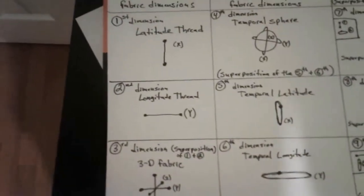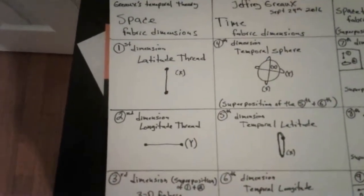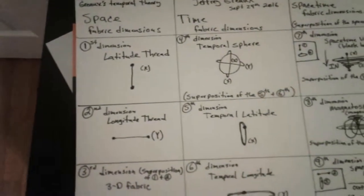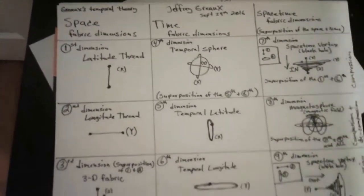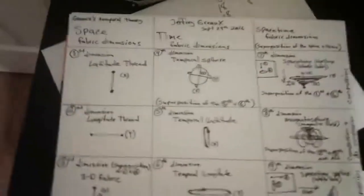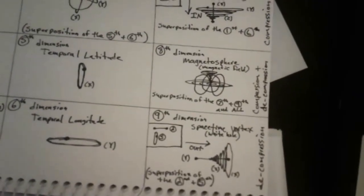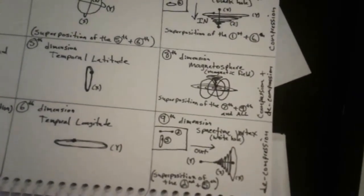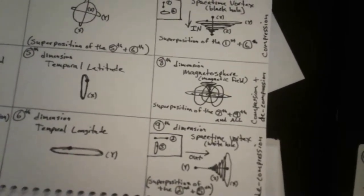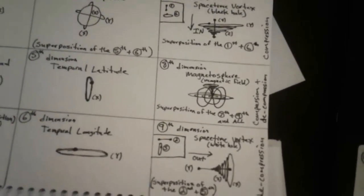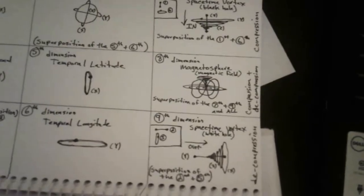I did the same thing for the second dimension — the longitude thread and the temporal latitude. When you put both of those together, you get the same effect but going in the opposite direction — going out. You start at a singularity and as you go out the intervals increase and go up. We'll go into this a little bit later.